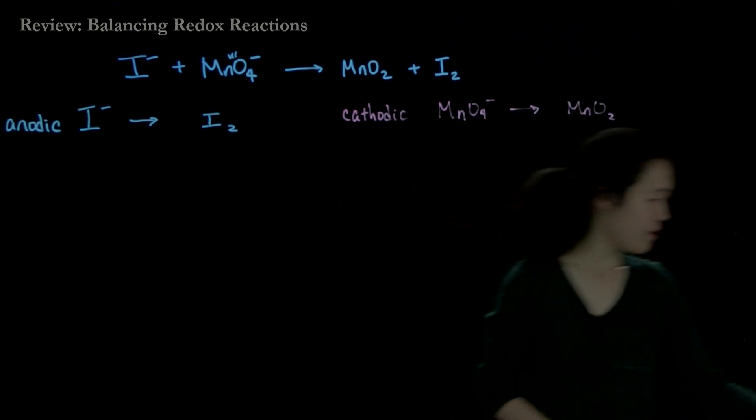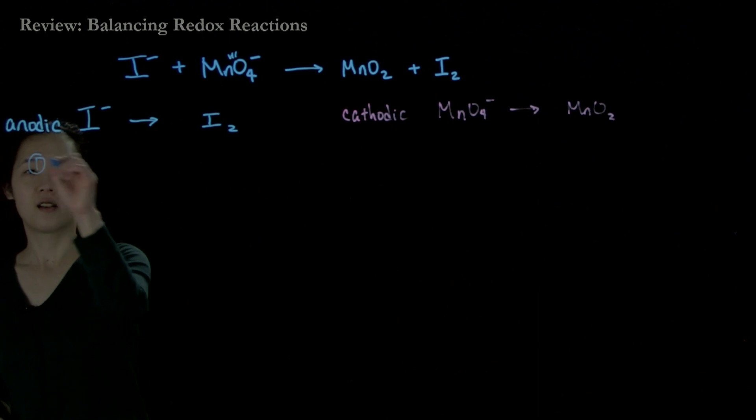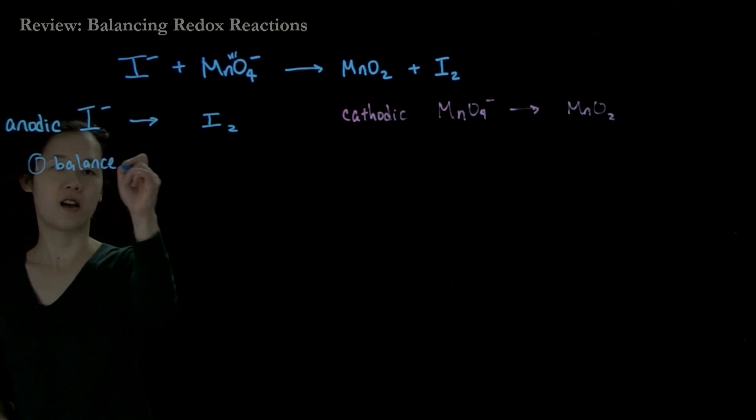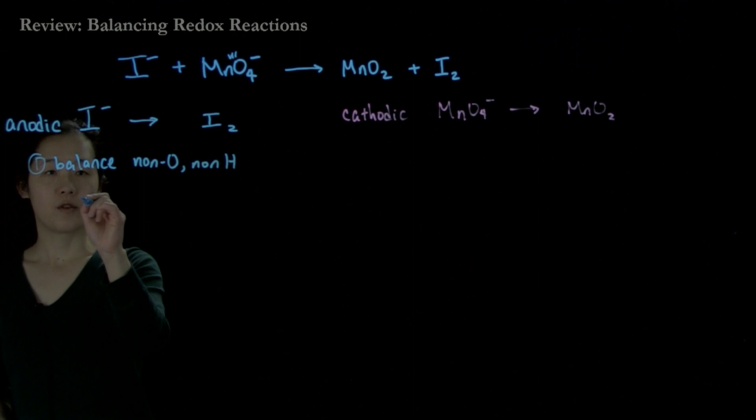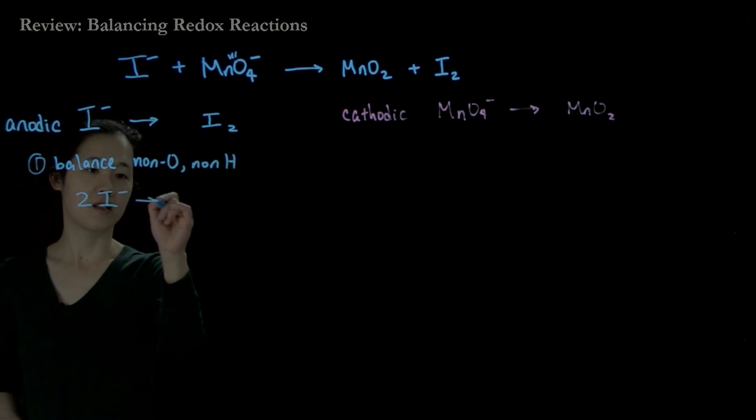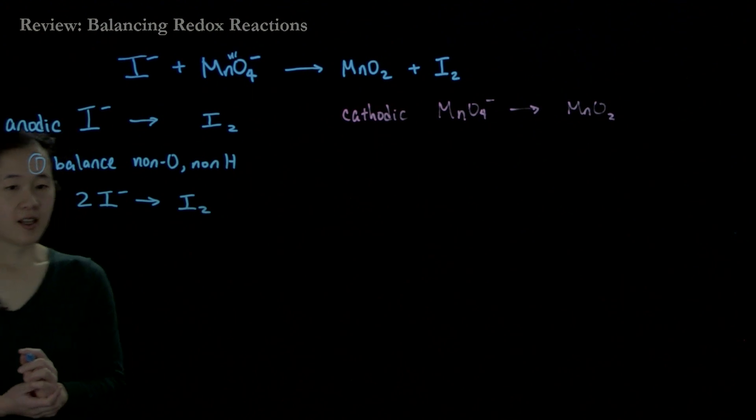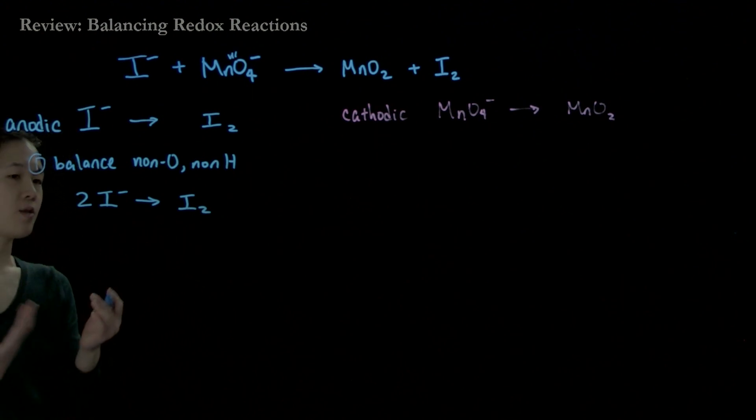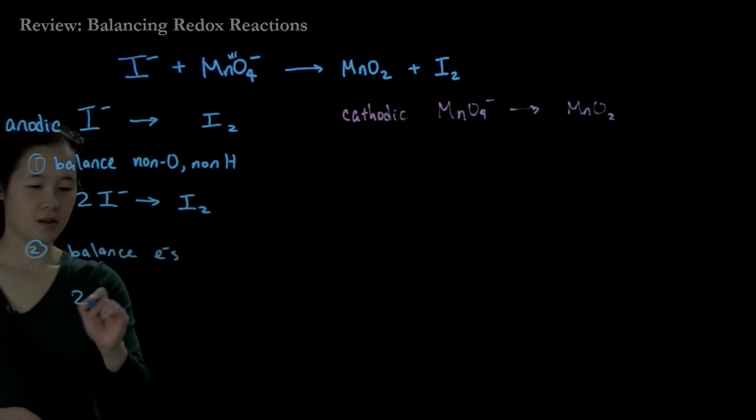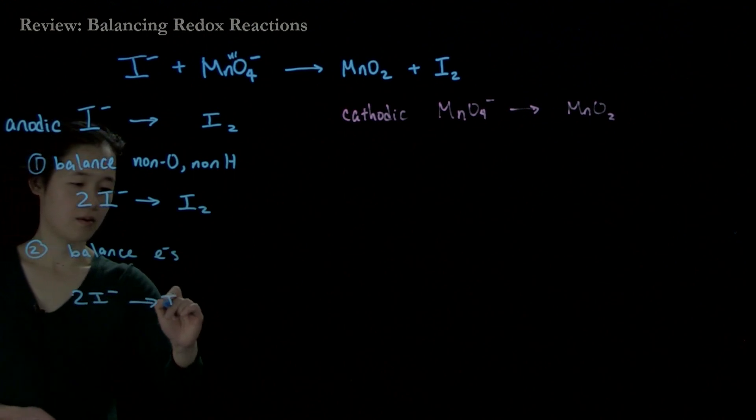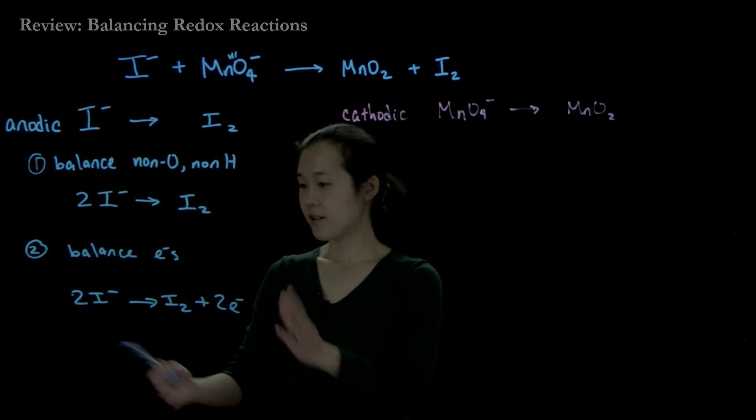For step one, we'll balance non-oxygen, non-hydrogen atoms. We'll balance this by writing 2I- going to I2. Everything must be balanced—that's the key thing to remember. Because we don't have any oxygens or protons on the iodide side, we can then balance electrons: 2I- goes to I2 plus 2e-. This is already a balanced half-reaction.